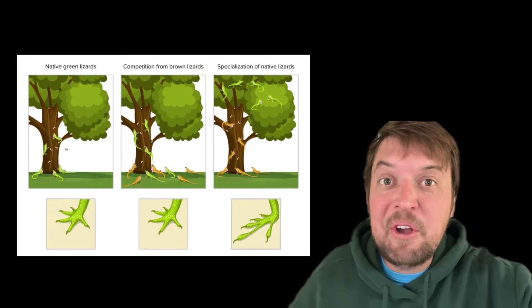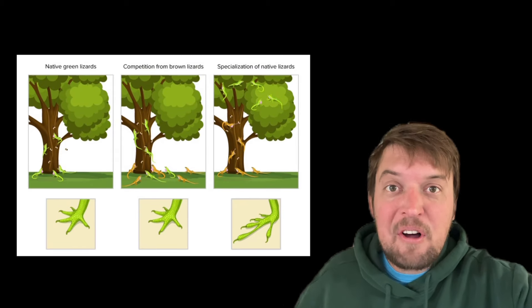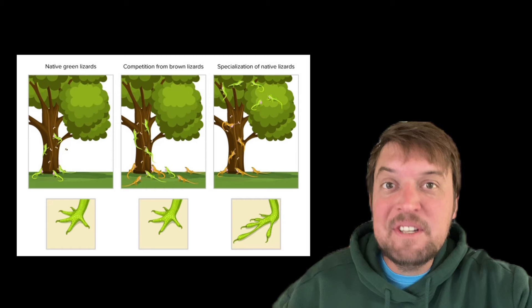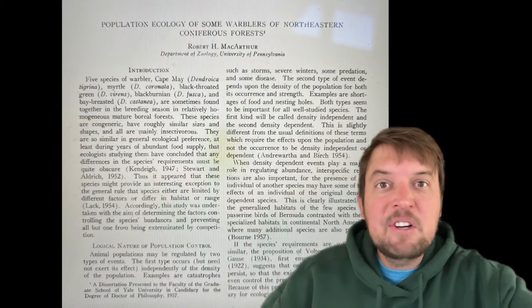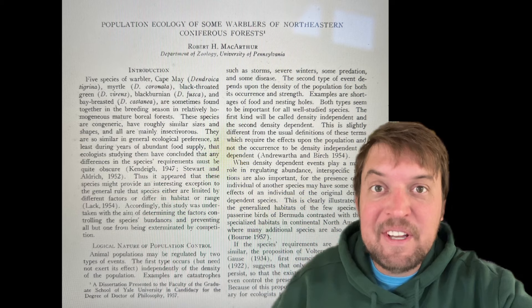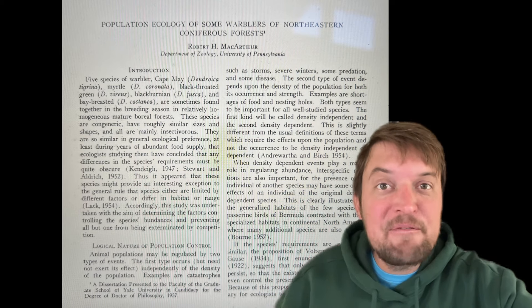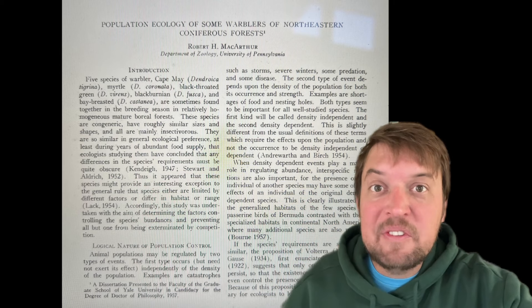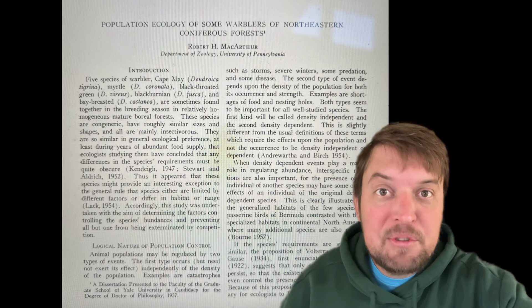So the other species will either go extinct or they'll have to evolve or change their behavior to fill a different ecological niche. A classic example from ecologist Robert MacArthur in 1958 explains how five different species of warblers can coexist in the same spruce trees in Maine.